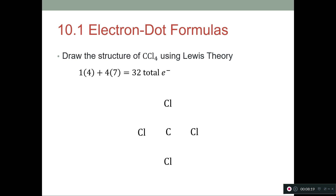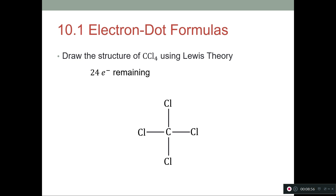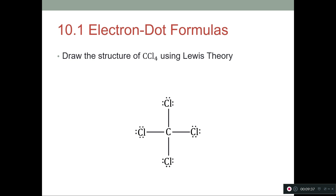We have 32 total electrons, and we subtract four bonds times two electrons each, leaving 24 electrons remaining. We put those around the terminal atoms, placing six electrons around each chlorine to fill their octets. That uses all 24 remaining electrons. We have zero remaining, so this is the complete structure for carbon tetrachloride.